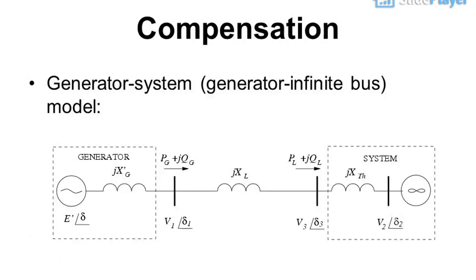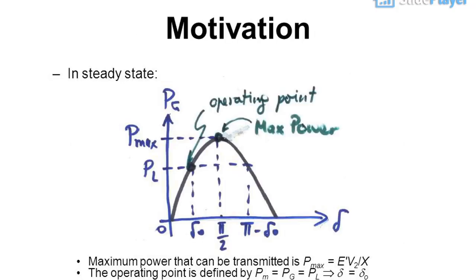Compensation: Generator System, Generator Infinite Bus Model. Motivation in Steady State: the maximum power that can be transmitted is P_max = EV/X. The operating point is defined by P_M = P_G = P_L = 0.